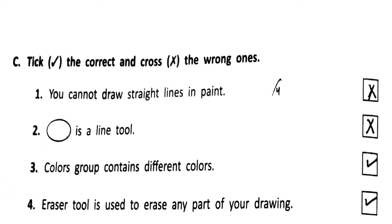Number 2: the shape you can see is a line tool. Is this a line tool? No — we will cross it. Number 3: colors group contains different colors. Yes, the colors group does contain different colors — we will put a tick mark.